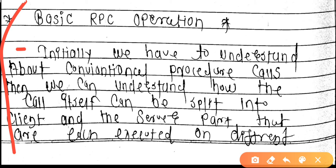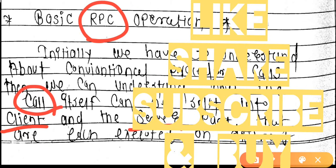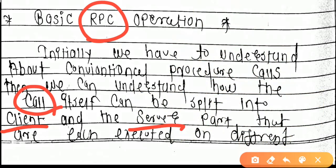To understand RPC, we first need to understand conventional procedure calls, then we can understand how the call itself can be split into client and server. For example: the client makes a request to the server. The server receives that request — that is, a call is generated — and the server sends a reply back. That reply is the RPC response.